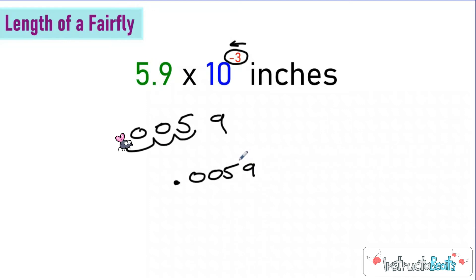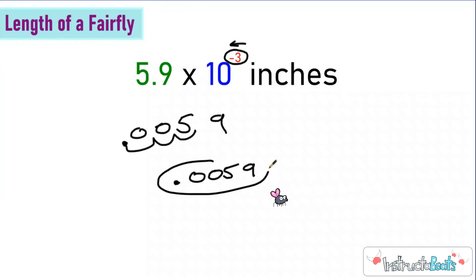The length of a firefly is 0.0059 — 59 ten-thousandths. So imagine an inch, which is kind of like from your pinky knuckle to your pinky first knuckle, and that divided by 1,000 basically. Very tiny, probably can't even see with your eye, but this is how you would write that number in standard form.